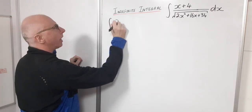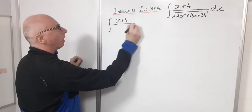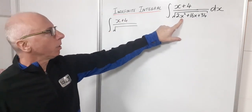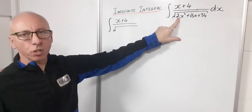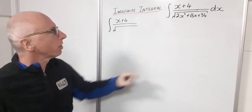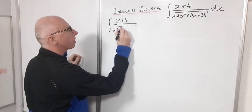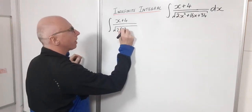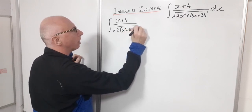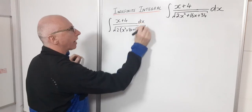So I've got the integral x plus 4 over square root of this. Now what we're going to do with that, well I can take the 2 out for a start because that's 16 and 34. So I can take the 2 out straight away. So I've got x squared plus 8x plus 17, and then obviously my dx.